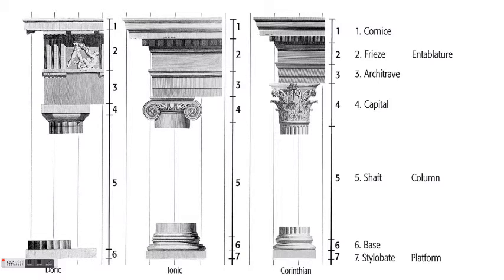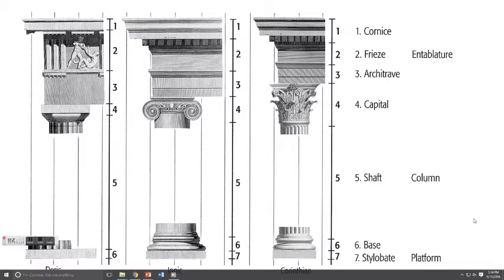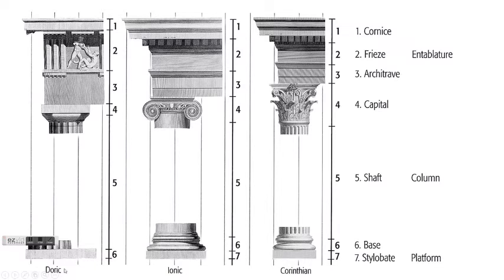Everything about Greek architecture was about buildings looking solid, looking like they could hold weight. There are three main Greek orders you will need to know: the Doric, the Ionic, and the Corinthian. The Doric is the oldest, generally considered the most traditional and conservative. Roman writers often saw the Doric as the most masculine, whereas the Ionic was seen as lighter and more feminine, with thinner columns spaced further apart.